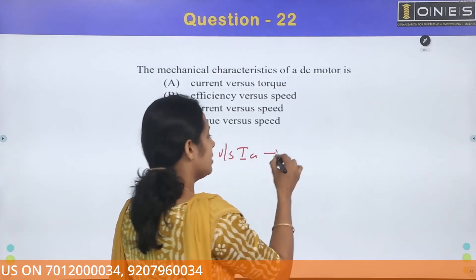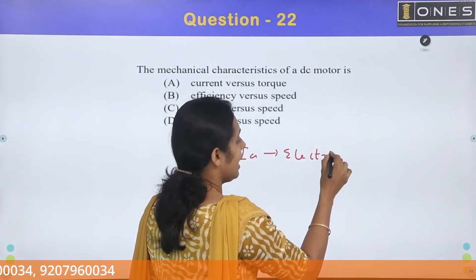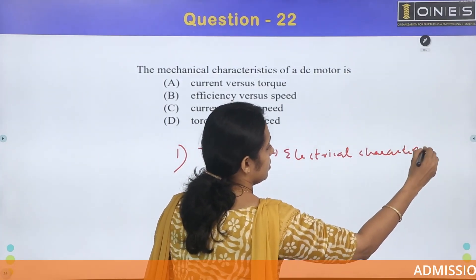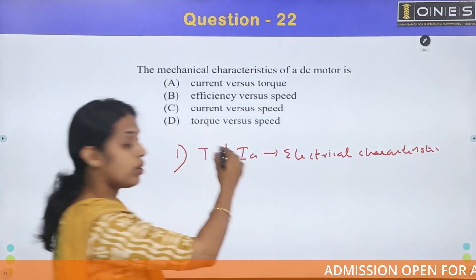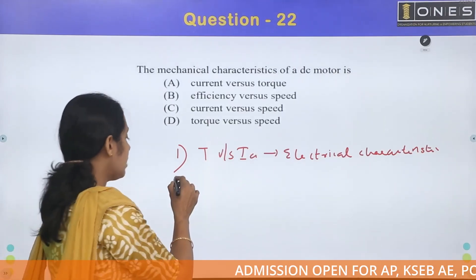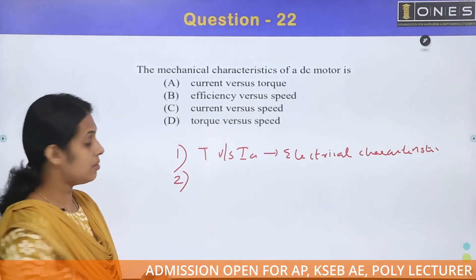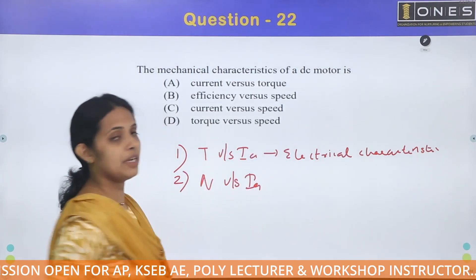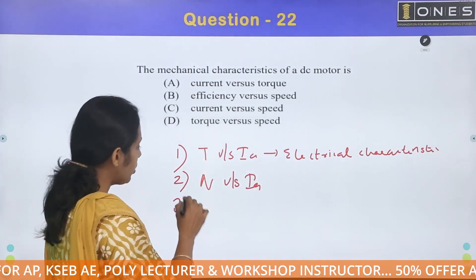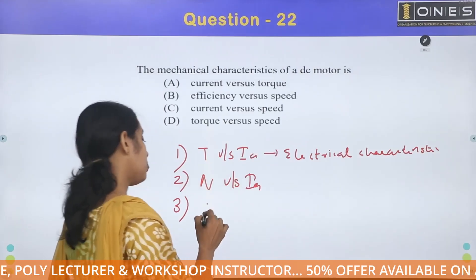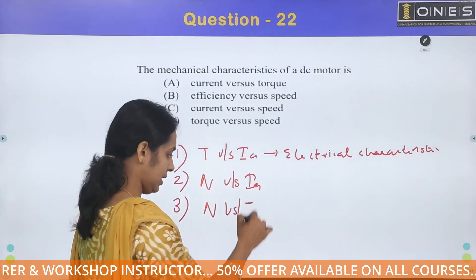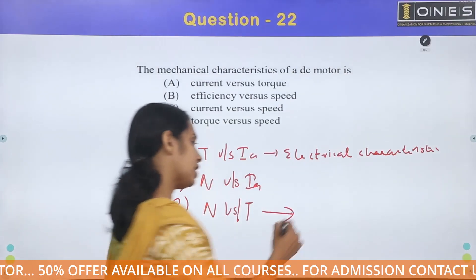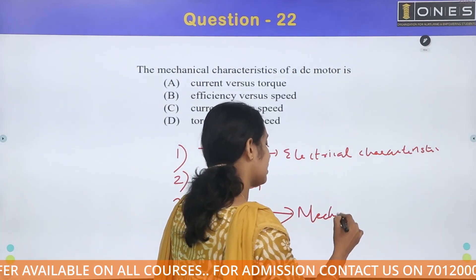What we are learning about is electrical characteristics. This is the electrical characteristics of DC motor. So, torque vs. armature current is the first. The second characteristic is speed vs. armature current. The last graph is speed vs. torque. This is the name — speed vs. torque — and this is the name of mechanical characteristics.